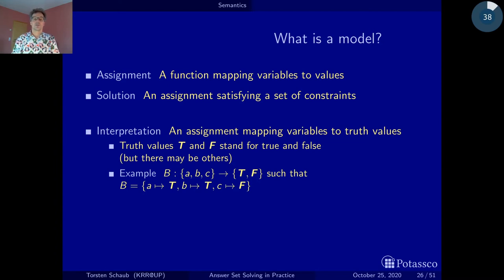Then here's an example. Just a function that maps variables A, B, C, but now to truth values. This particular function maps A to true, B to true, and C to false, just as above. Very straightforward generalization.